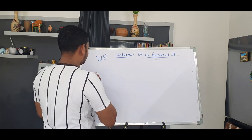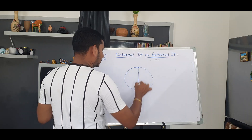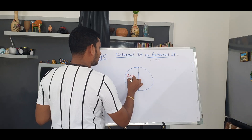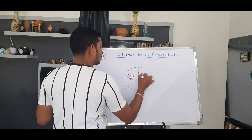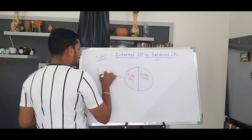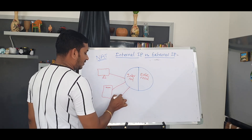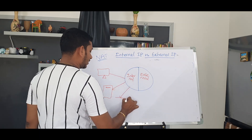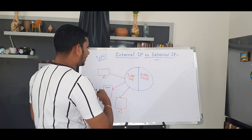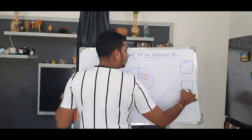In the modem, there are two parts. This is the internal system and this is the external system. The internal system has many devices connected to IP addresses — you have a laptop, a mobile, different devices like lights, Alexa, a desktop, and a server.